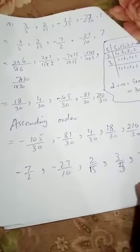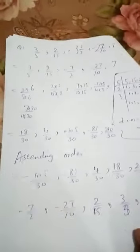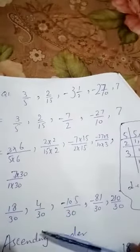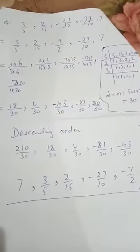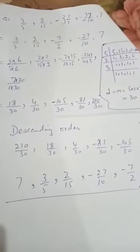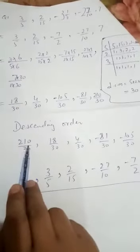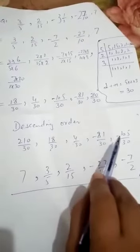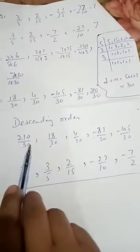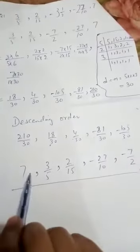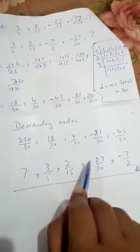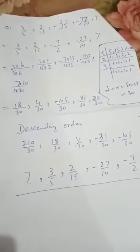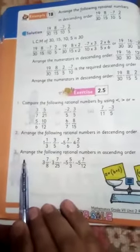Now similarly we do the descending order. Descending order is the placing of numbers from greatest to smallest. We start from the greatest numerator: 210/30, then 18/30, 4/30, −81/30, and −105/30. Writing the original rational numbers, the descending order is: 7, 3/5, 2/15, −27/10, and −7/2.